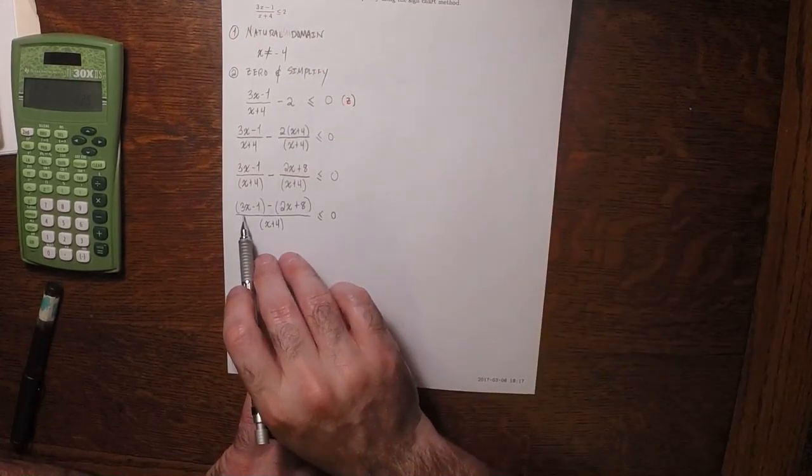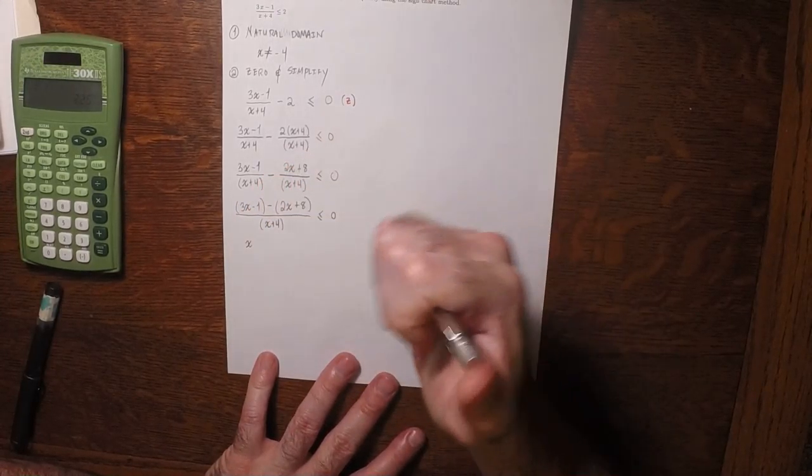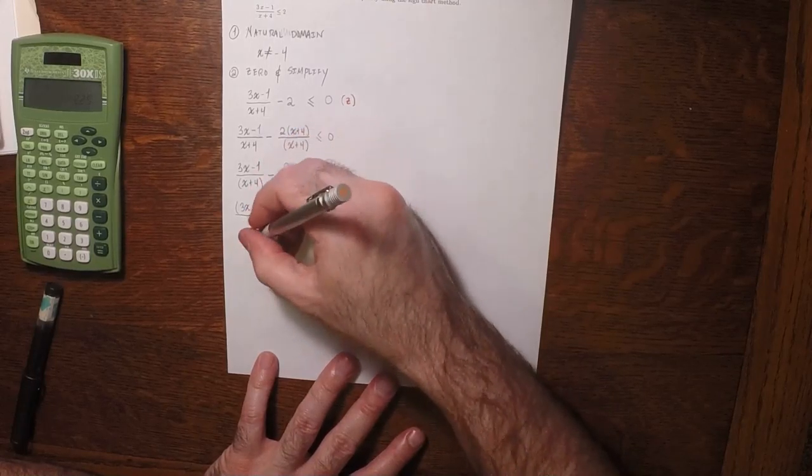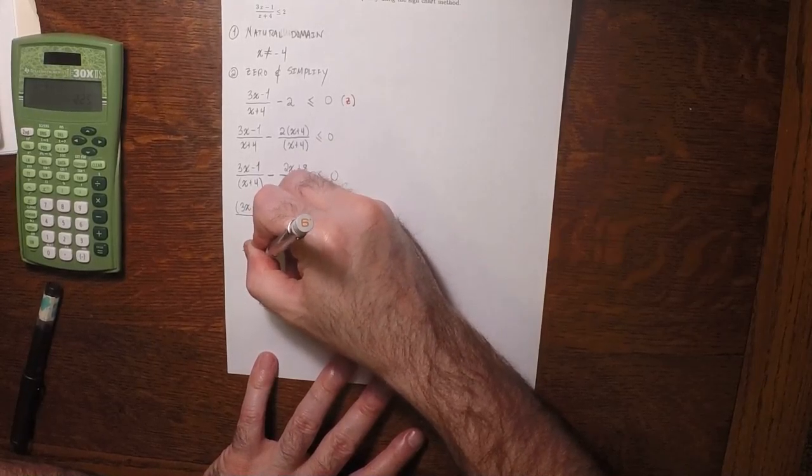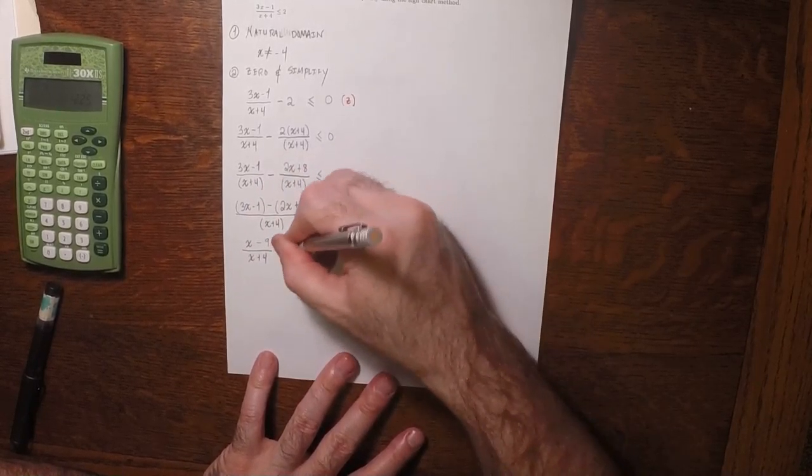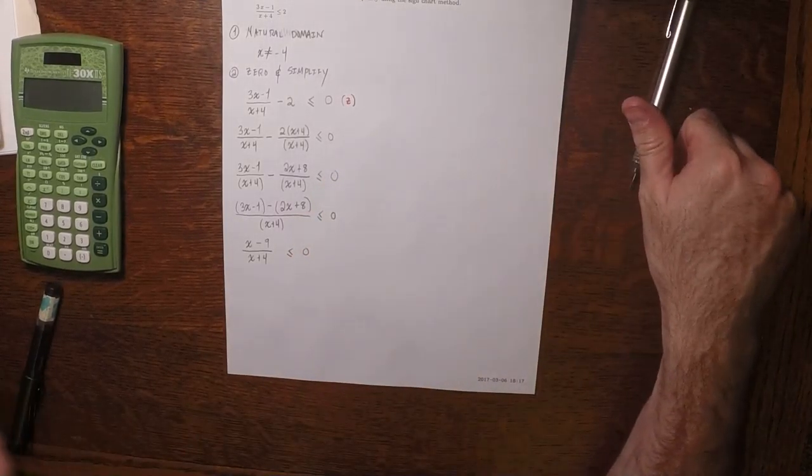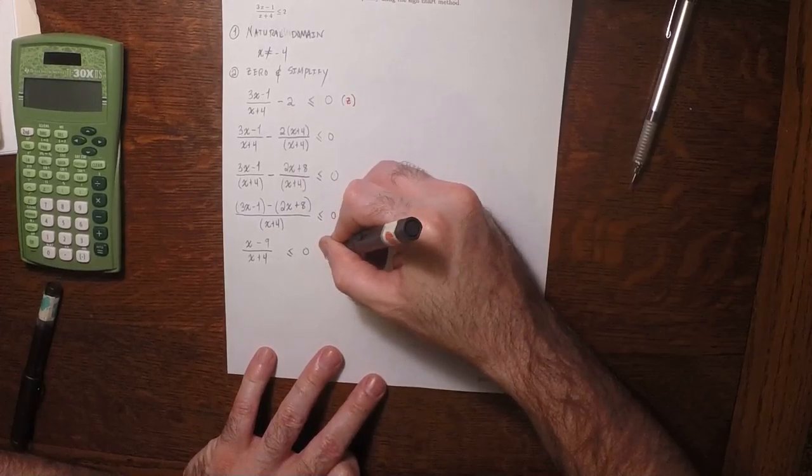Negative 1 minus 8 is negative 9, so (x - 9)/(x + 4) is less than or equal to 0. This is the simplified step.